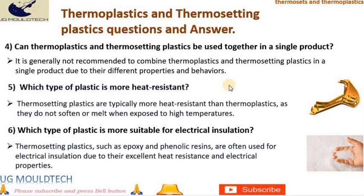5. Which type of plastic is more heat-resistant? Thermosetting plastics are typically more heat-resistant than thermoplastics, as they do not soften or melt when exposed to high temperatures. 6. Which type of plastic is more suitable for electrical insulation? Thermosetting plastics, such as epoxy and phenolic resins, are often used for electrical insulation due to their excellent heat resistance and electrical properties.